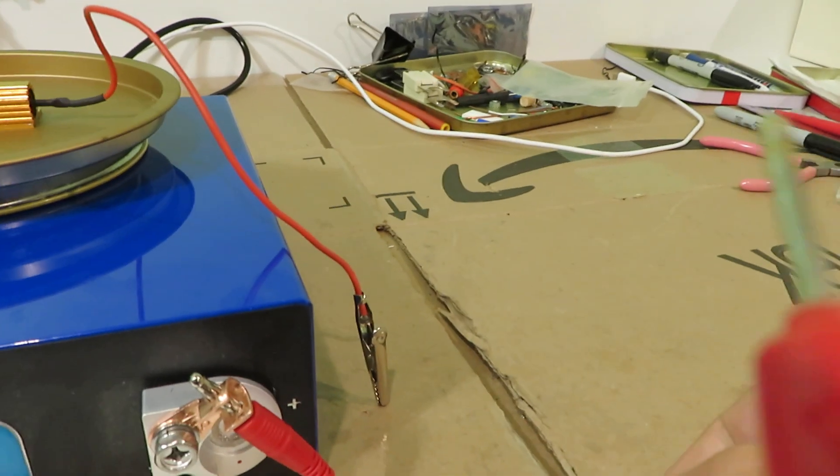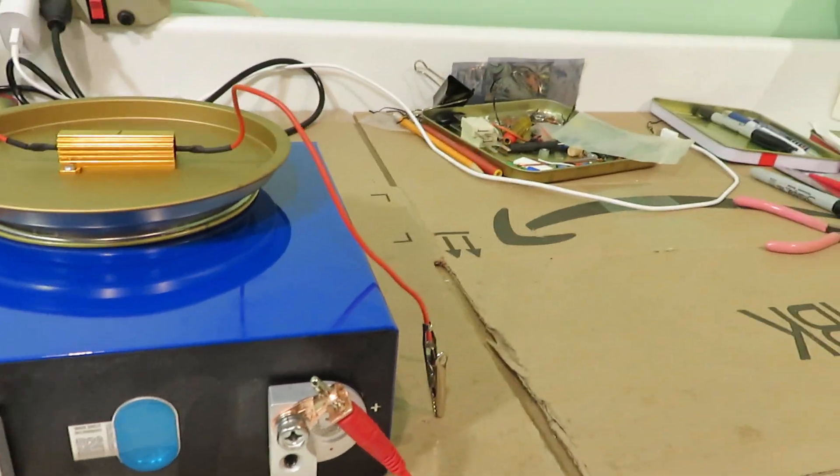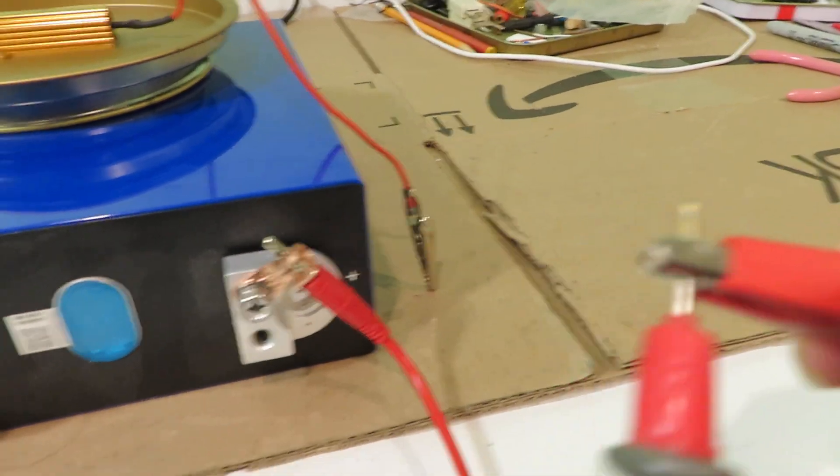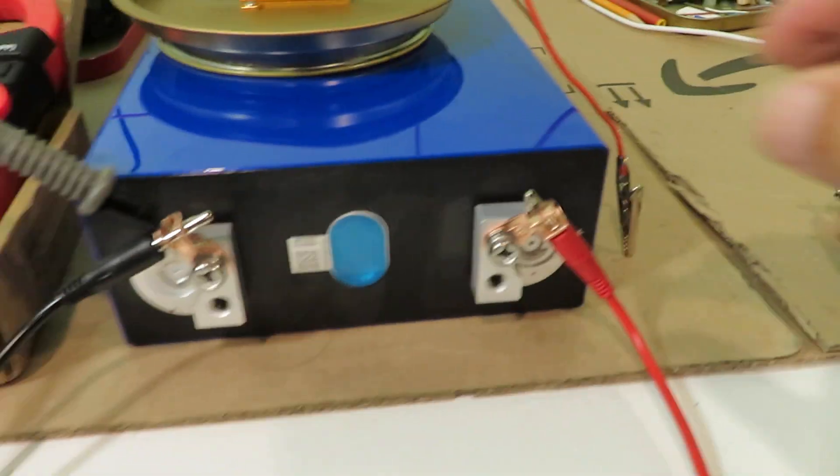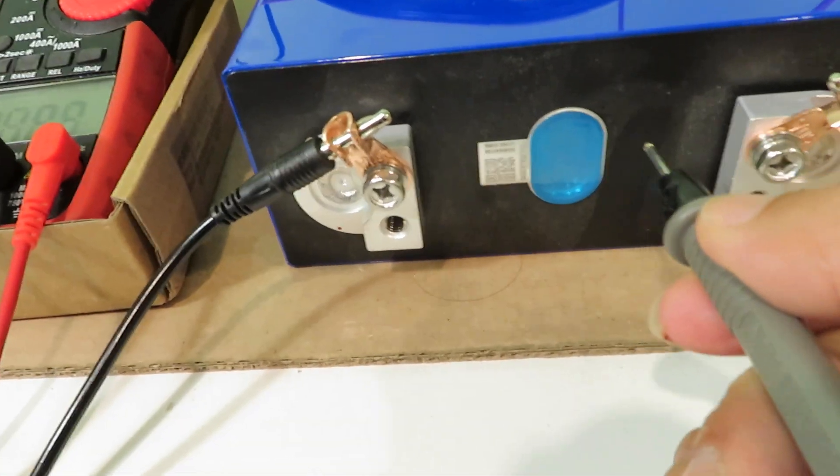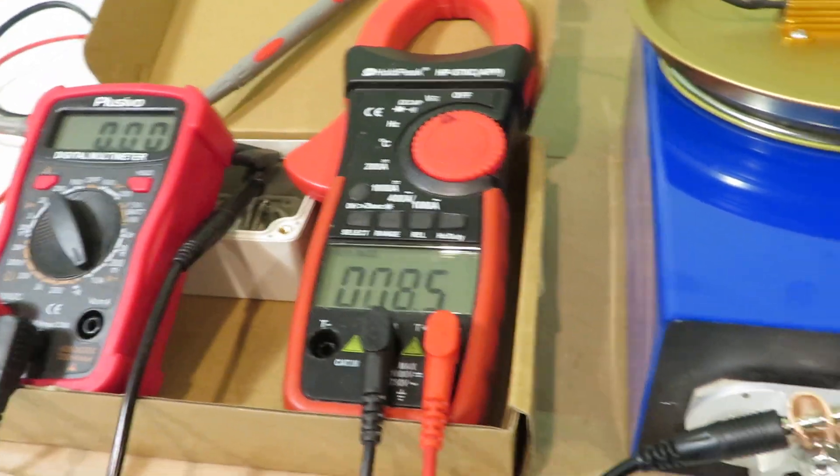In this area, let me hook up my probe to the positive. And I just use the negative to touch the aluminum casing.